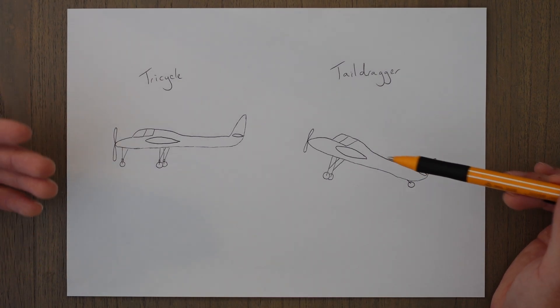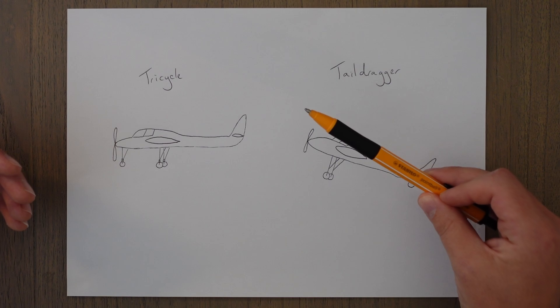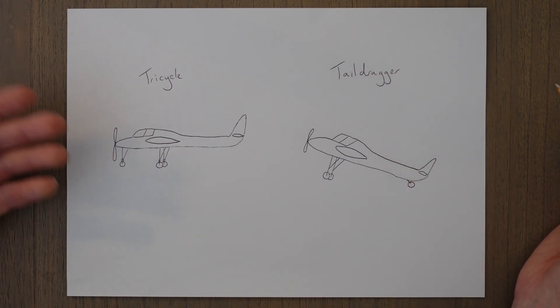This configuration is often found on classic aircraft, like those first commercial aircraft that flew across the Atlantic, and they're also common in bush aircraft and agricultural aircraft. It gives the aircraft a nose-up attitude on the ground or the tail drags across the ground, hence the name.